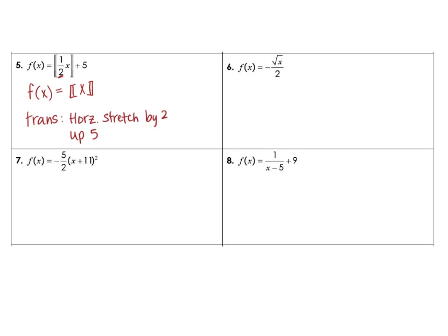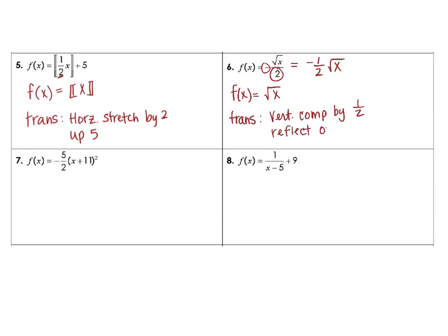Number 6 – our parent function here is the square root of x. Then our transformations – let's rewrite this to help us see – that's really negative 1 half times the square root of x. So the number on the outside – for our transformations, this time we're going to have a vertical compression by 1 half. And then the negative is going to reflect over the x-axis.